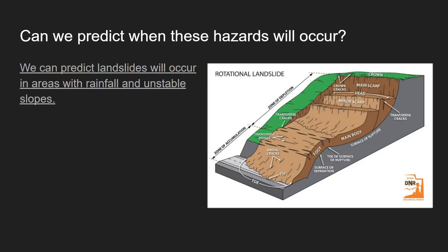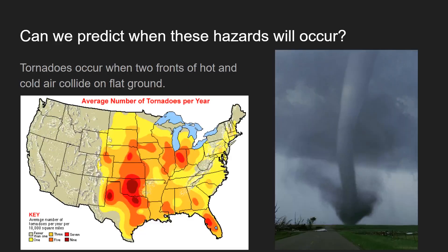So we need to ask ourselves: can we predict when these hazards will occur? Landslides are somewhat easier to predict. You can't predict them all, but you can predict they'll at least occur in an area where there's a lot of rainfall, unstable slopes, loose soil, and things of that sort. The test will give you different scenarios and see if you understand whether they were predictable or not.